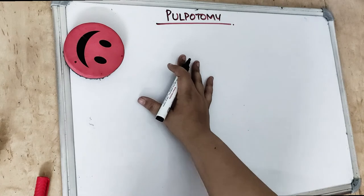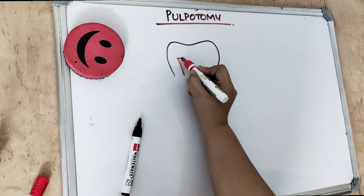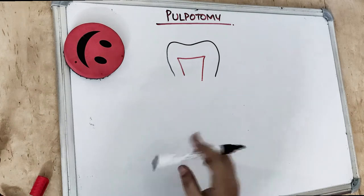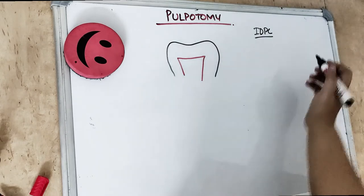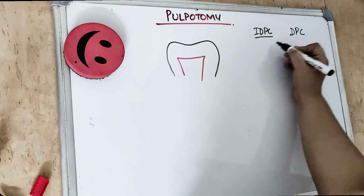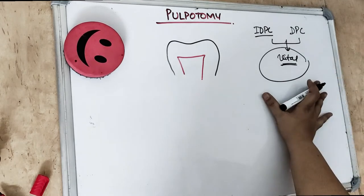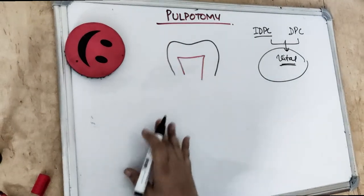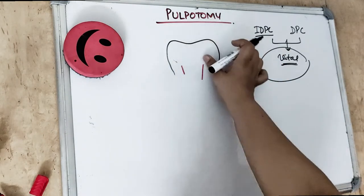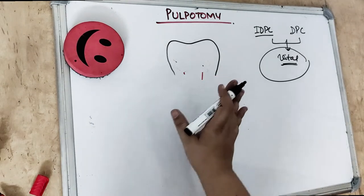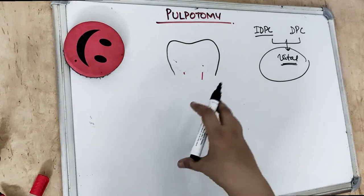Talking about pulpotomy — when there is a carious pulpal exposure, indirect pulp capping is done when the caries has not approached the pulp. In all three scenarios — indirect pulp capping, direct pulp capping, and pulpotomy — the pulp is vital. The vital pulpotomy is where the pulp is still vital.